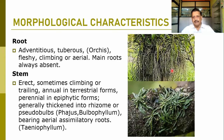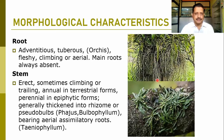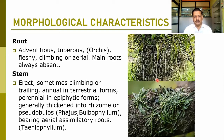The roots are mostly adventitious. Tuberous roots can also be observed. They may be fleshy, climbing, or aerial. Main roots are always absent because they are mostly epiphytic or saprophytic, so a subsidiary root system develops — adventitious or tuberous in nature. Stems are mostly erect, sometimes climbing or trailing, annual in terrestrial forms and perennial in epiphytic forms. They are generally thickened into a rhizome or pseudobulb, particularly in Bulbophyllum, which has bulbous structures bearing aerial assimilatory roots.